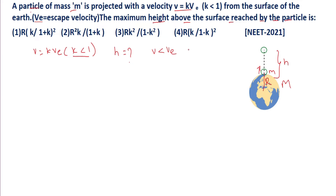We already know that if the value of velocity is equal to escape velocity, the body will go to infinity — that is, it escapes from the gravitational field of the earth. That means in this case the value of H will be equal to infinity. But in our case the value of V is less than escape velocity, so surely it reaches a certain maximum height and then falls back.